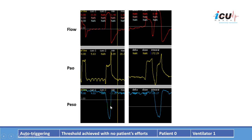Compared to a breath triggered by the patient — where a drop in esophageal pressure results in the patient's breath, the ventilator breath, and inspiratory/expiratory flow — in the auto-triggered breath there is no drop in esophageal pressure. The triggering threshold was achieved with no patient effort: zero breaths from the patient but the ventilator delivered a breath. This could be caused by a circuit leak, cardiac oscillations, or secretions.